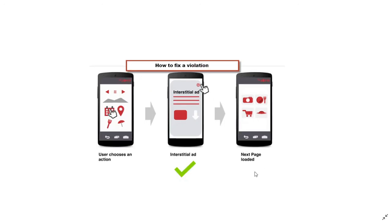This is the allowed example of interstitial ad implementation: when a user clicks any action, you show the interstitial ad first, and then show the next screen at the end. This is the correct and allowed way. Thanks for watching — please subscribe to my YouTube channel.